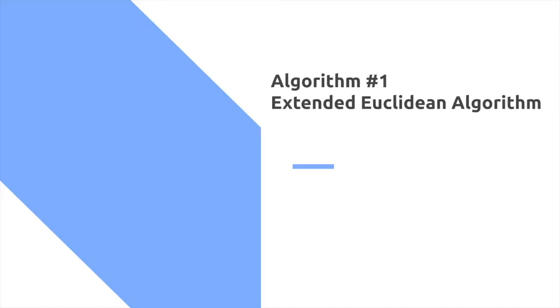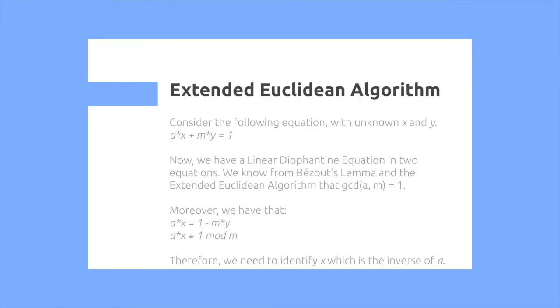The first algorithm we're going to be using is actually the extended Euclidean algorithm, which we covered in an earlier tutorial for GCD. The extended Euclidean algorithm considers the following equation with unknown x and y: a times x plus m times y is equal to 1.